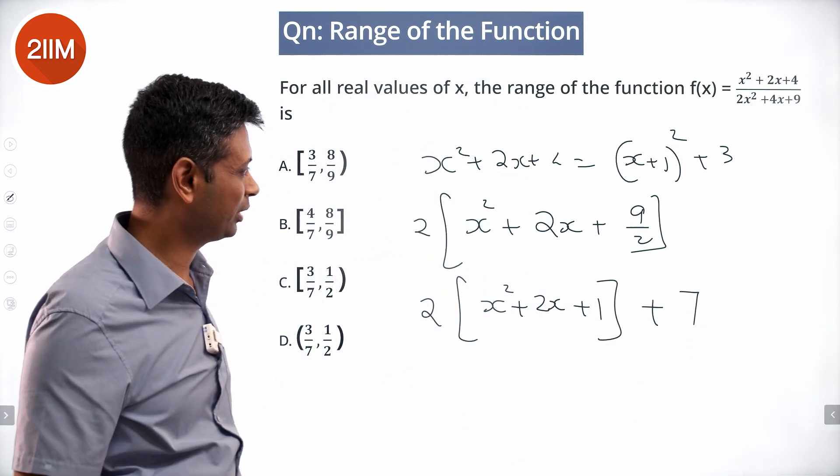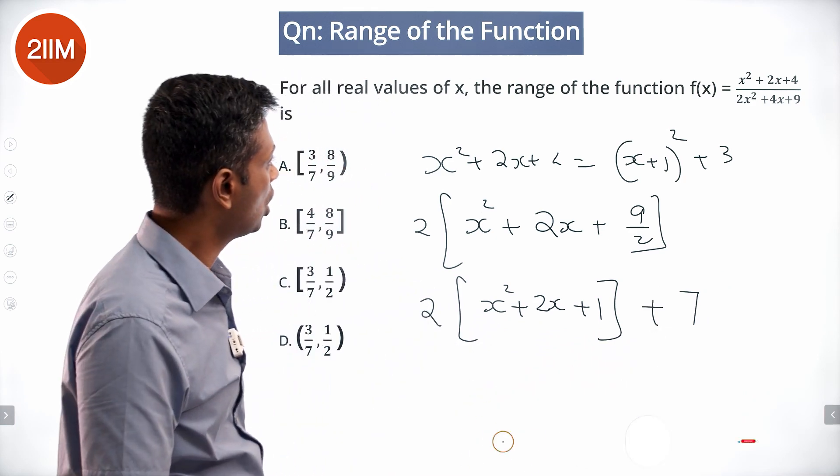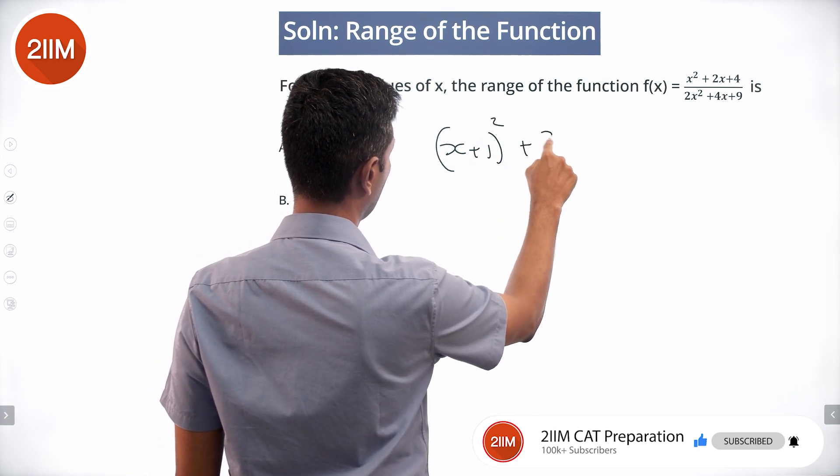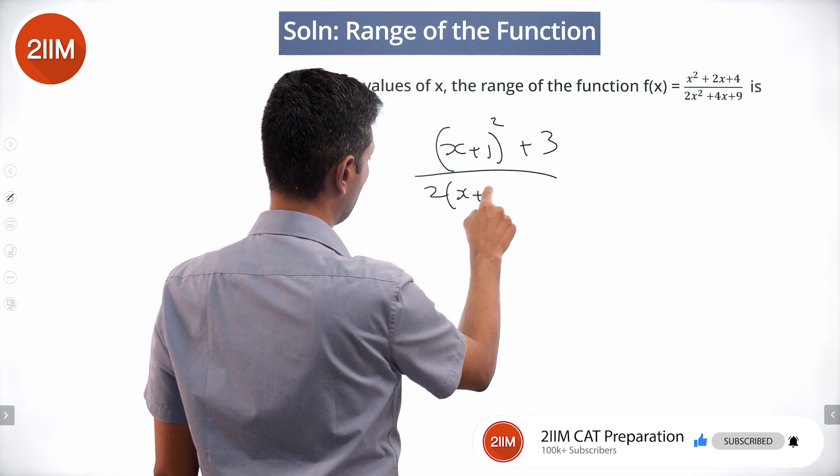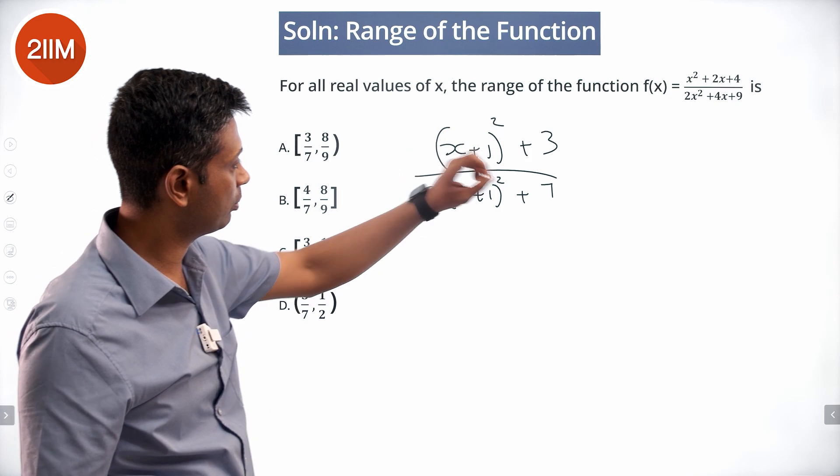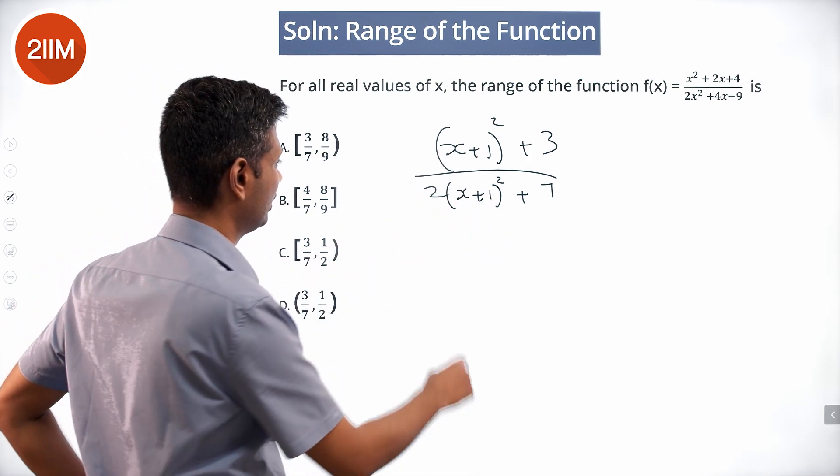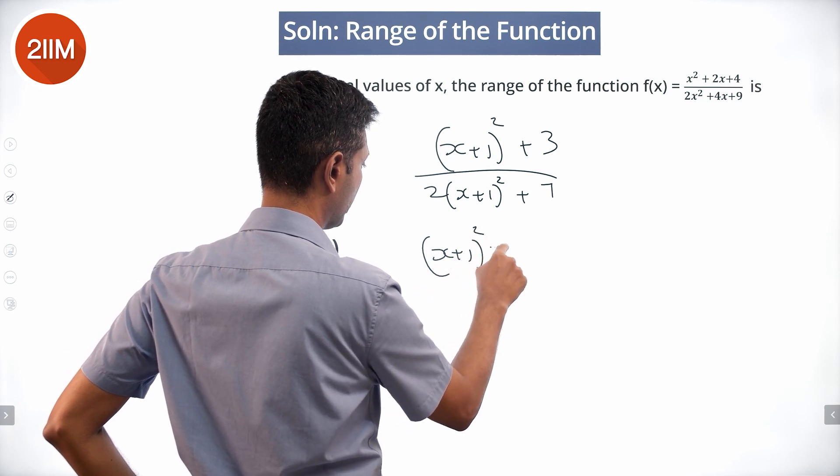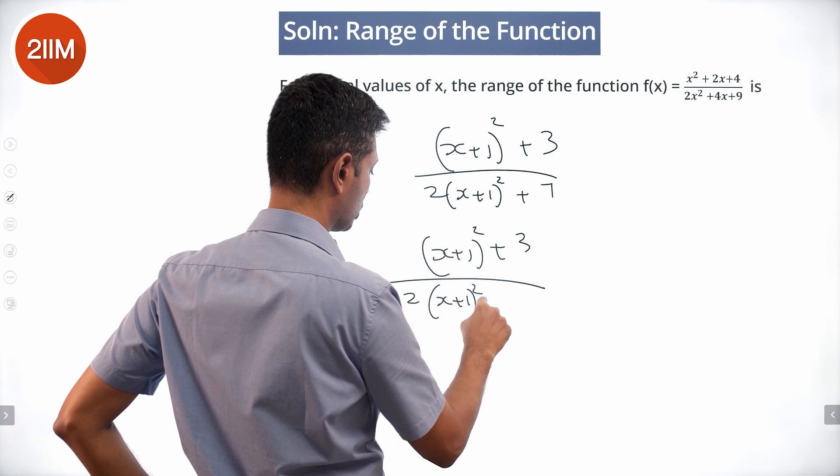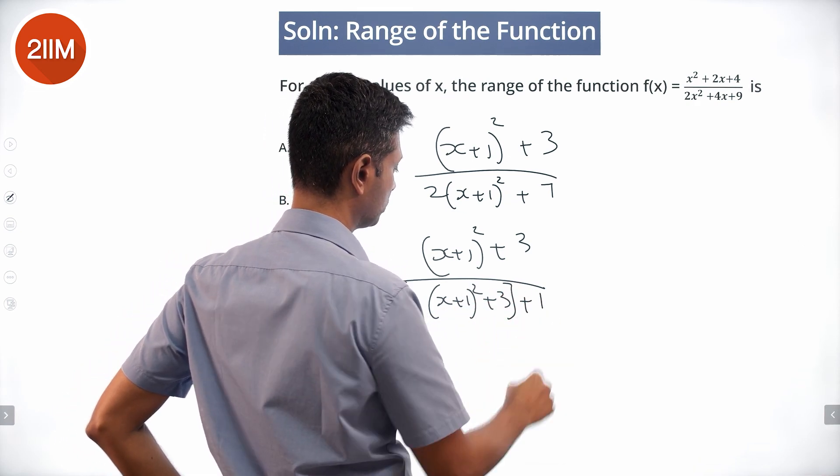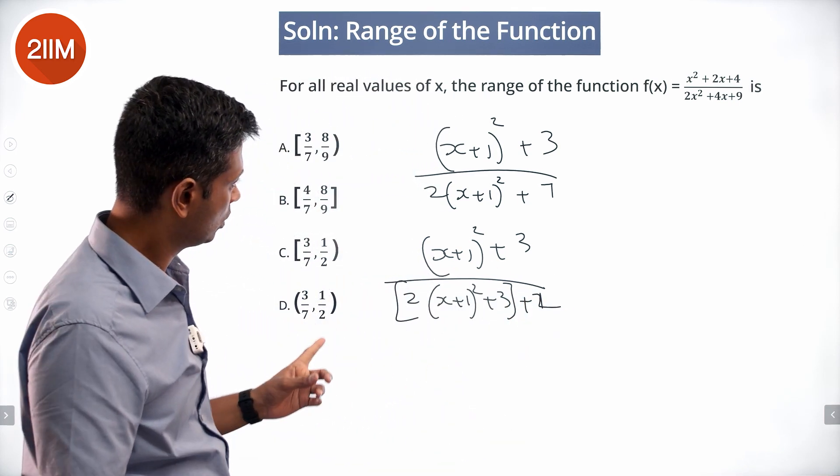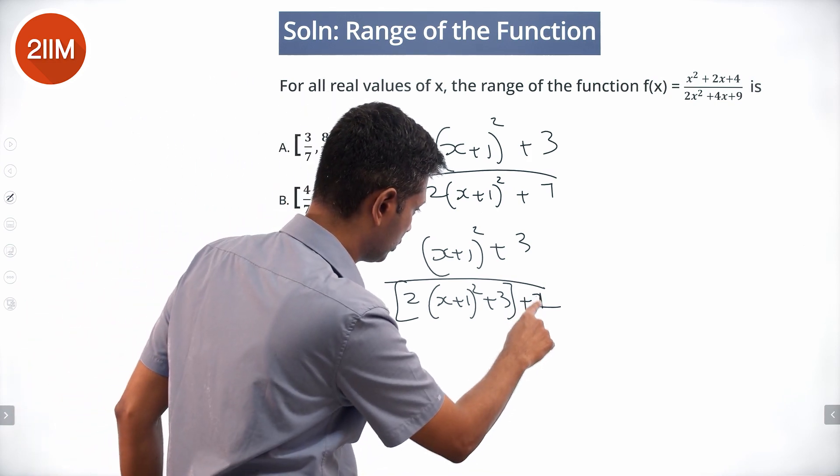7 by 2, taking 1 here and keeping the 7 that side. Or I can rewrite this expression as x plus 1 whole square plus 3 by 2 times x plus 1 whole square plus 7. Or x plus 1 whole square plus 3, 2 times x plus 1 whole square plus 3 plus 1.